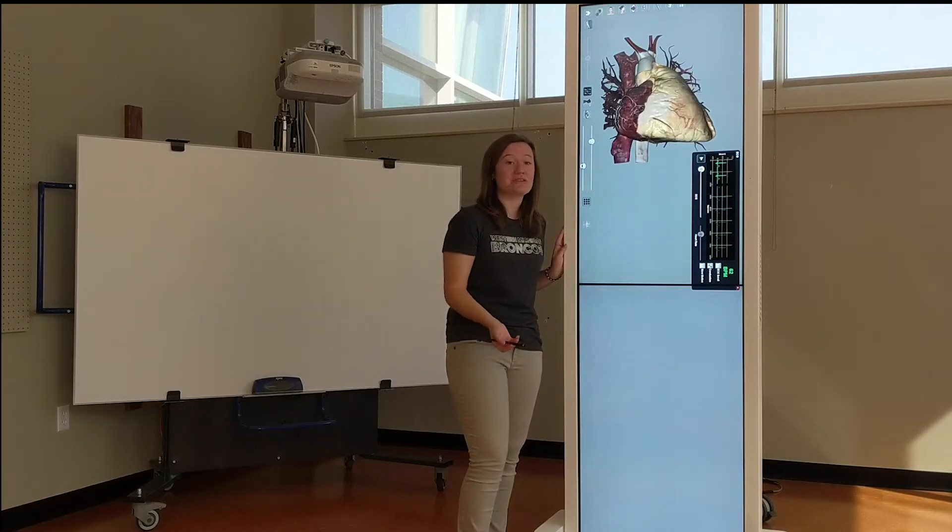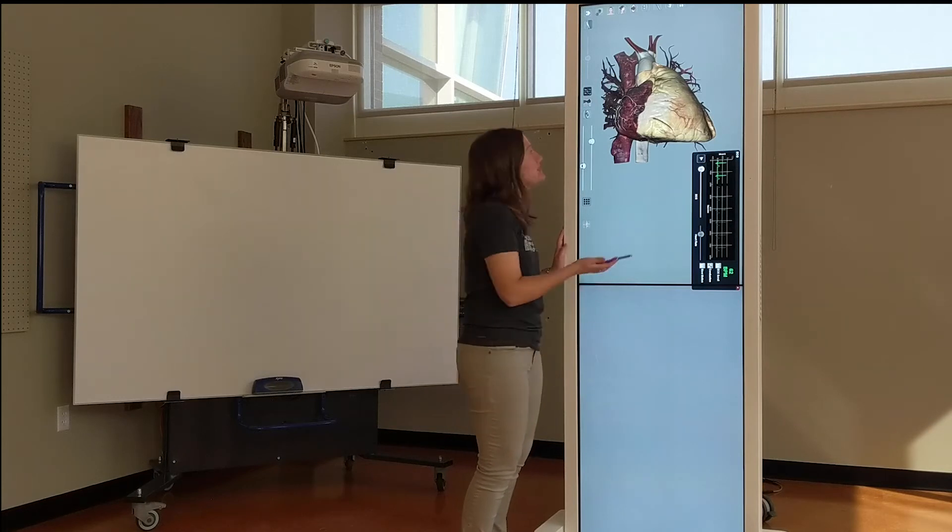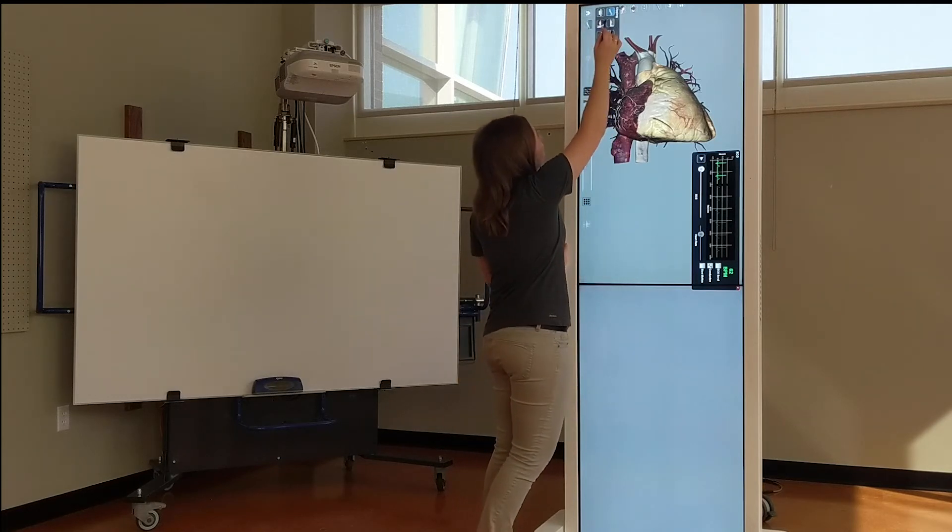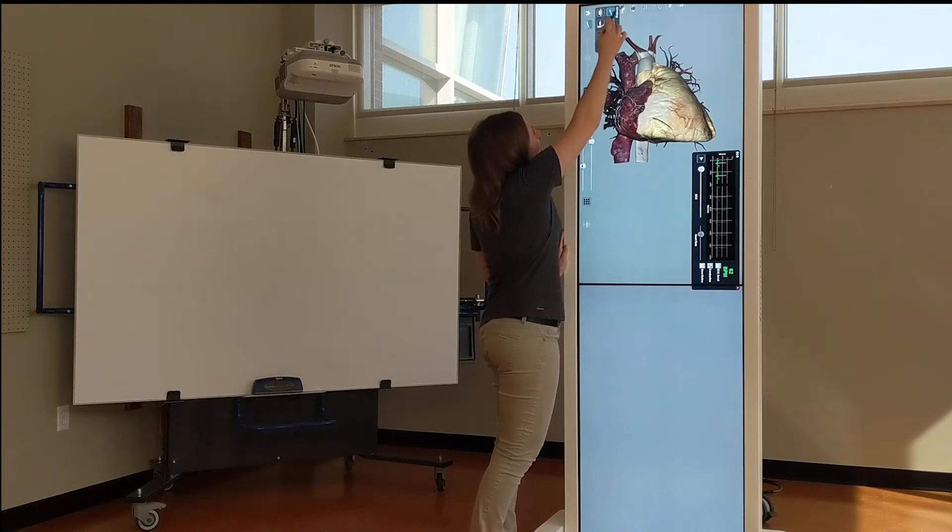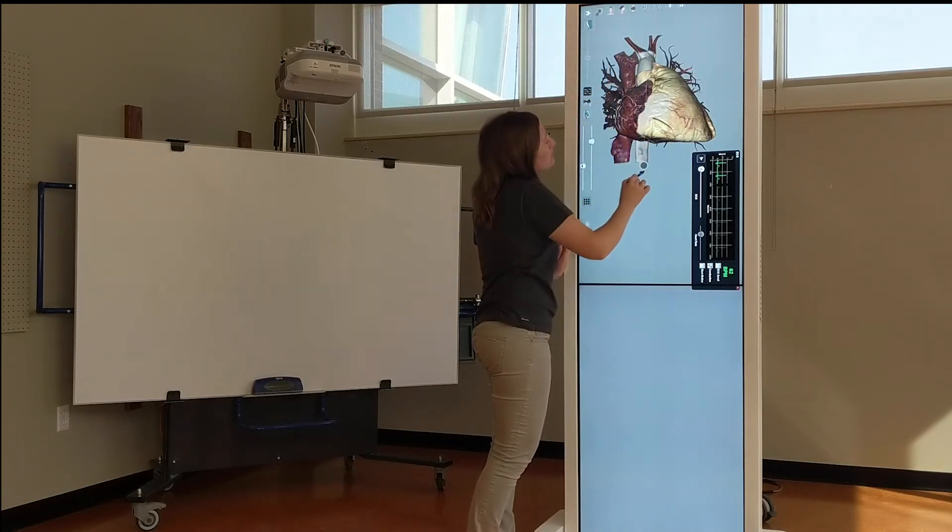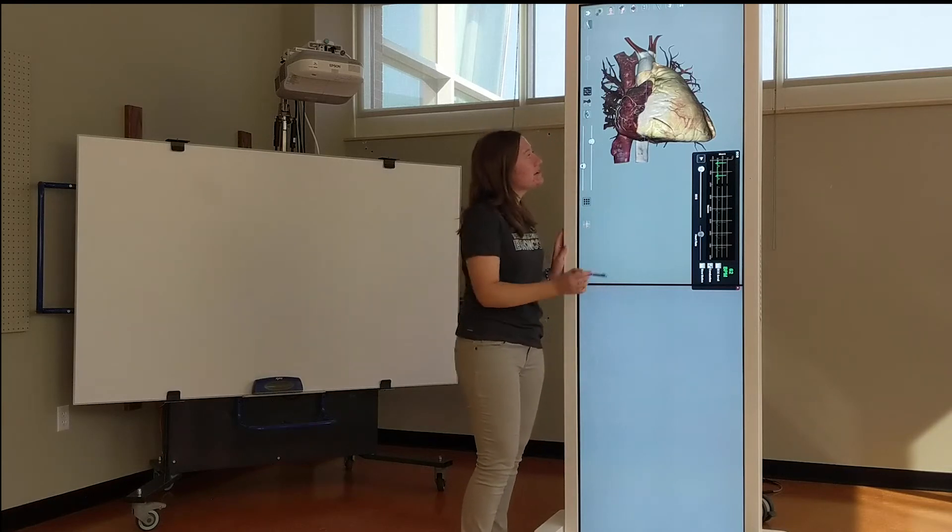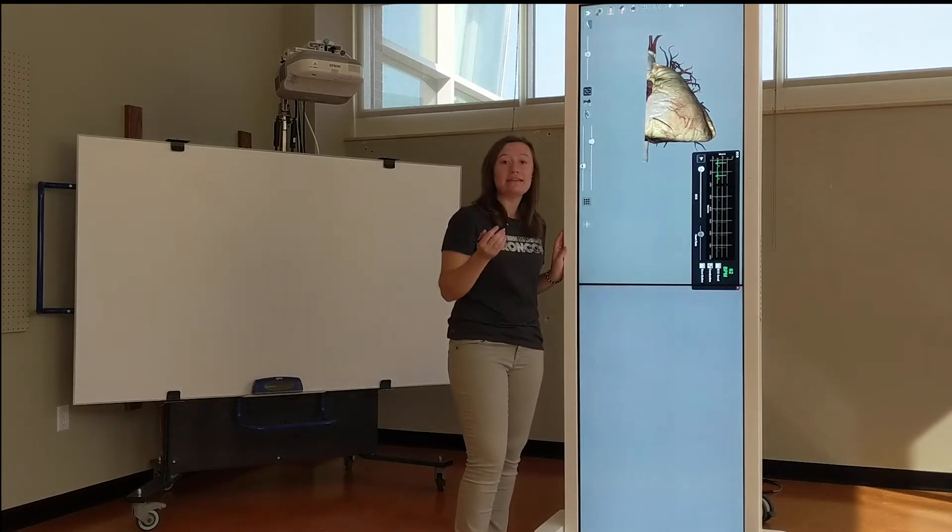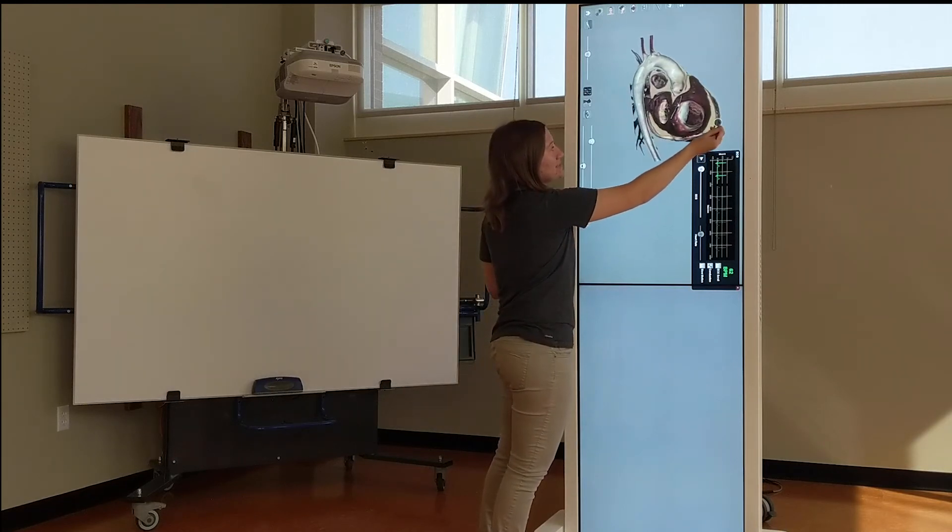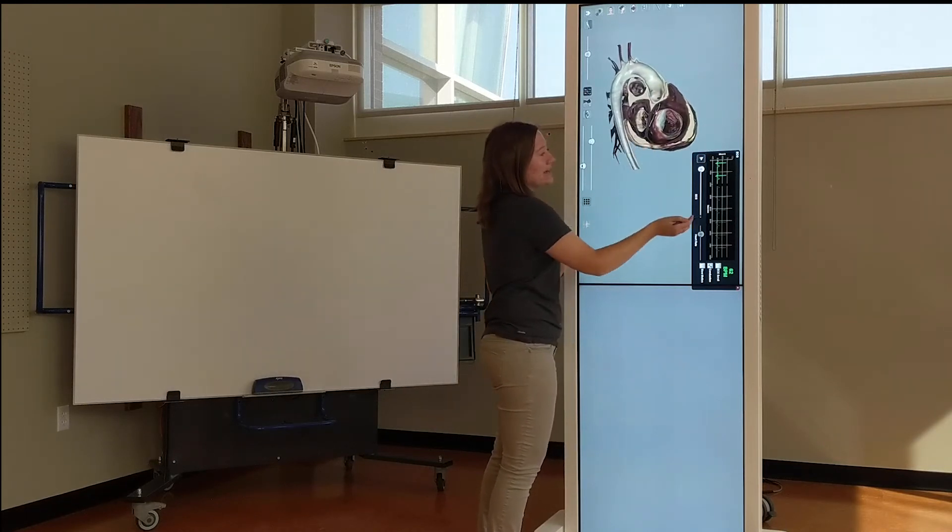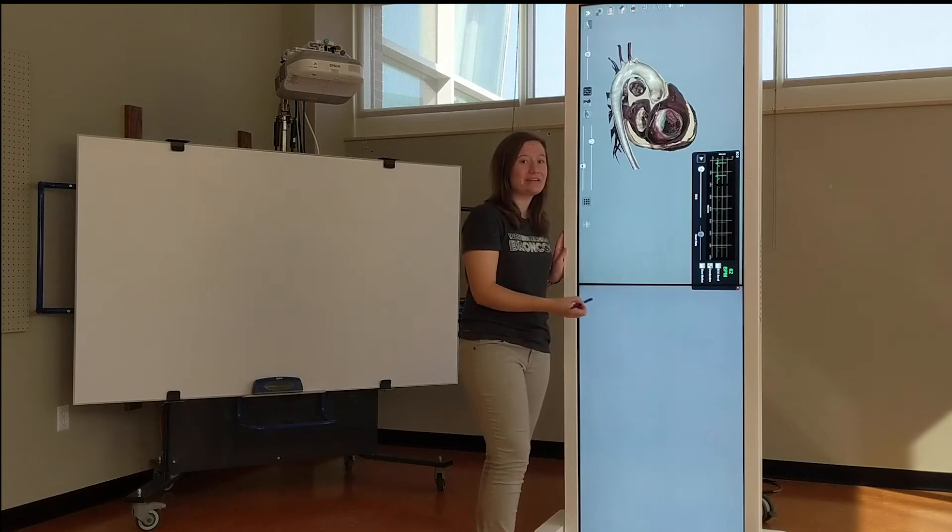One really cool feature of this table is you can dissect this heart to see what's going on inside while it's beating. As you can see here, I drew a line and that dissected half of it. Now I can twist it to see inside and I can even play the motion again.